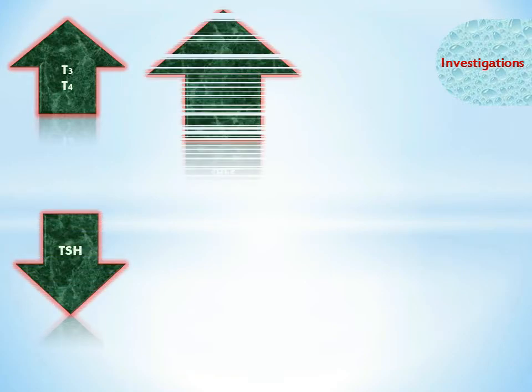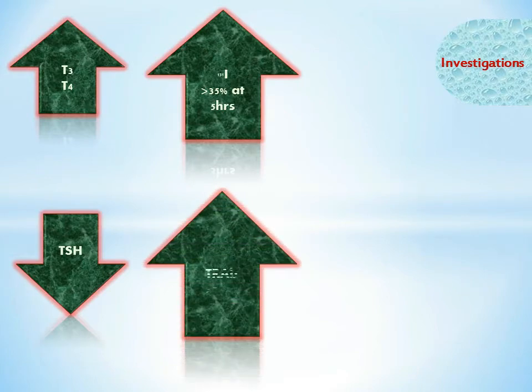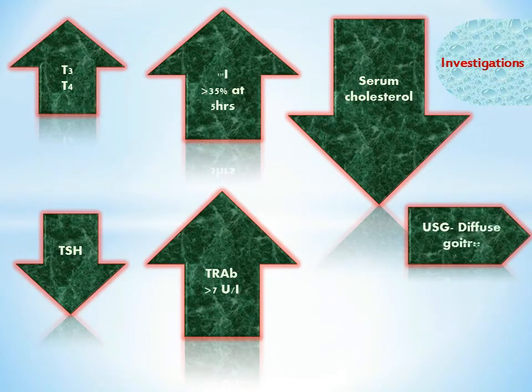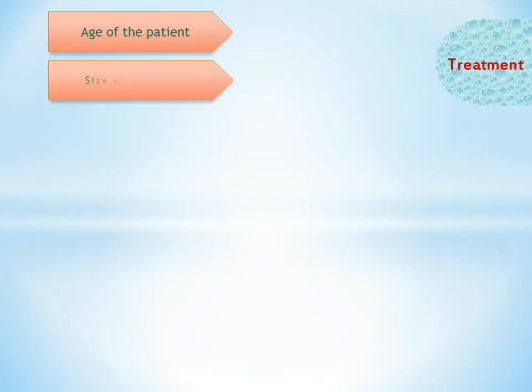Investigations of Graves disease: both T3 and T4 are elevated in the majority of cases. TSH is low or may become undetectable. Iodine-131 uptake is increased, more than 35% at 5 hours. TRAB (thyroid receptor antibodies) may be increased by more than 7 units. Serum cholesterol is low. Ultrasound shows diffuse goiter and EKG shows tachycardia, arrhythmias, and ST-T changes.